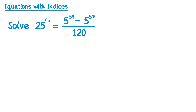Now we have another question where x is in amongst the powers, and again there are a few powers of 5: we've got 25, a 5, and a 5. There's also 120 — that doesn't look like a power of 5, but something really interesting will happen with that during this question. So let's start with the 25 to the power 4x — that's the same as 5 squared to the power 4x.